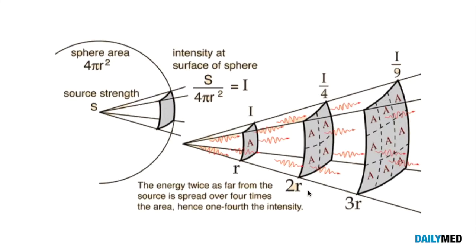So you can already see the pattern. We increase our distance by a factor of 2, however our radiation decreased by a factor of 4. The same thing applies if we increase our distance by a factor of 3 — our radiation will change by a factor of 9, specifically it will decrease.